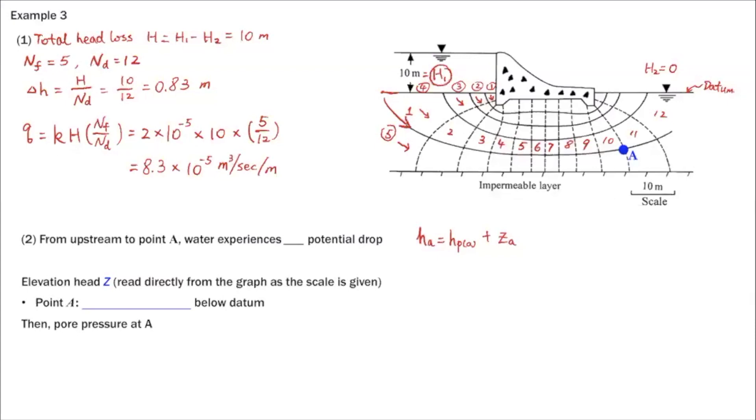So we just need to count how many head loss or potential drops water experiences from upstream to point A. So we have 1, 2, 3, 4, 5, 6, 7, 8, 9, and 10. From upstream to point A, water experiences 10 potential drops.